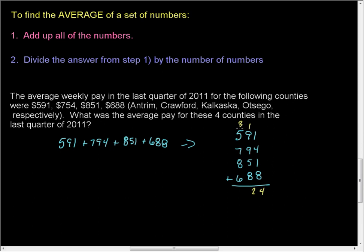8 plus, 5 and 3 is 8, plus 7 is 15, plus 8 is 23, plus 6 is 29. Okay, and so we have $2,924. So $2,924.